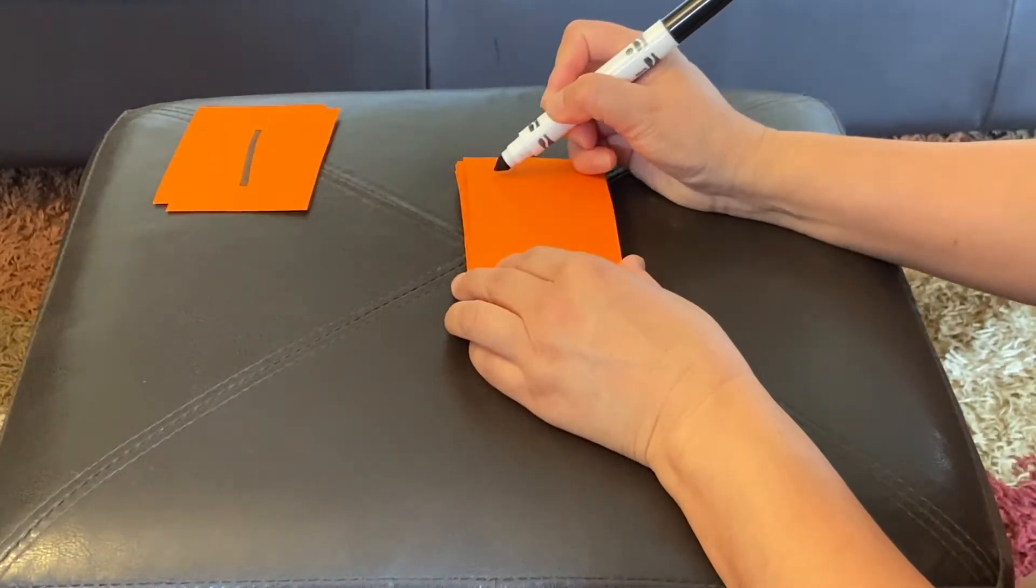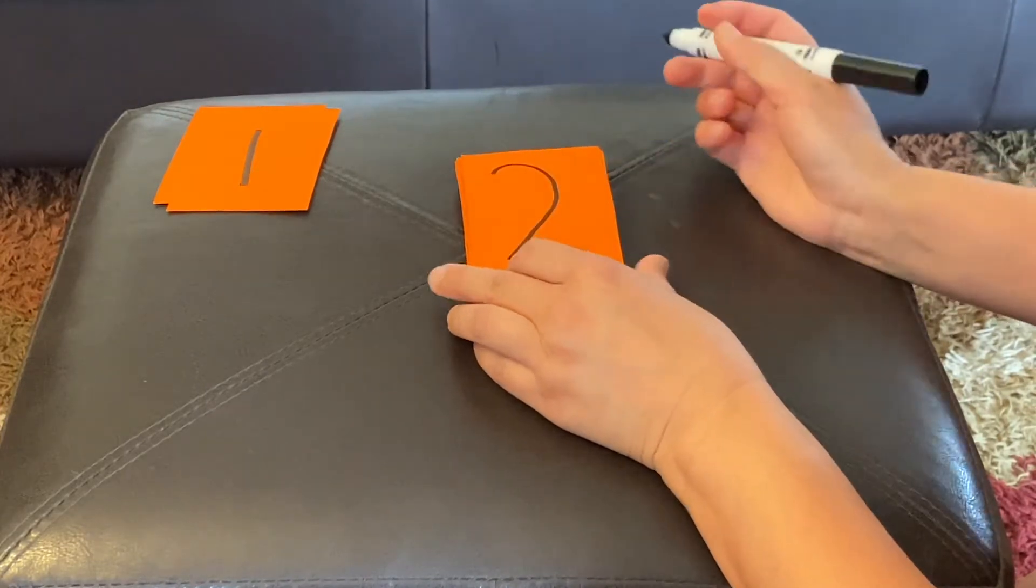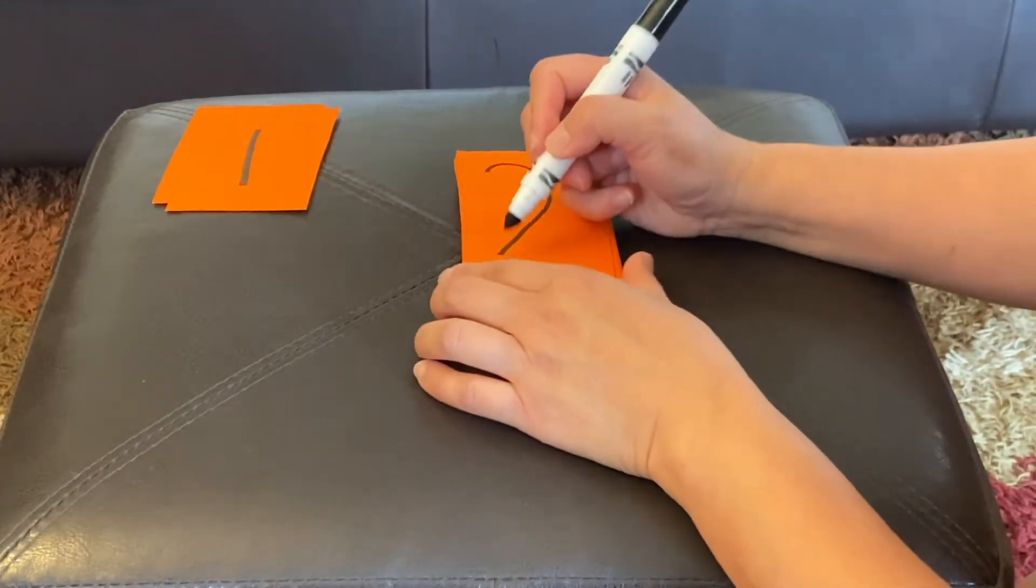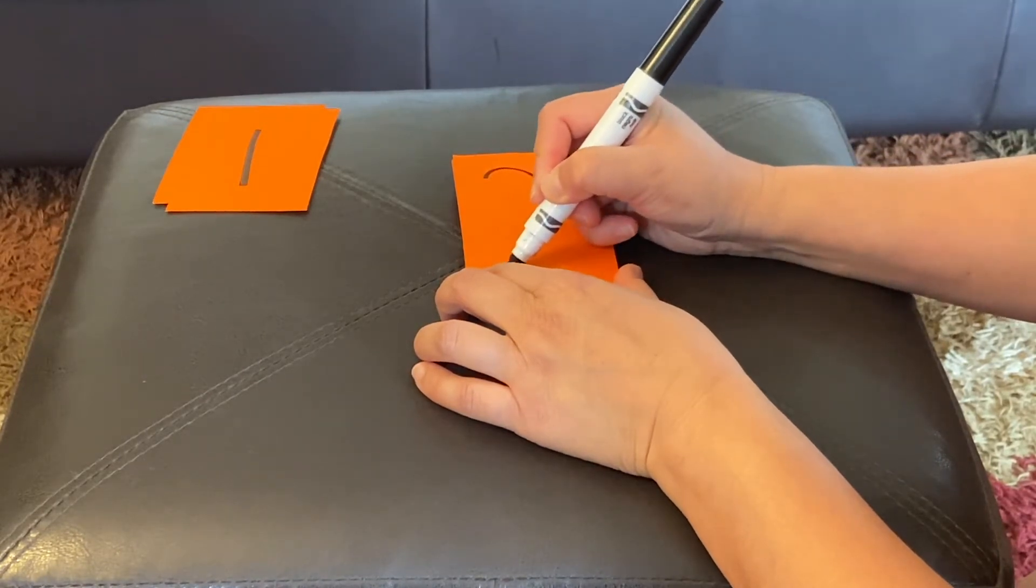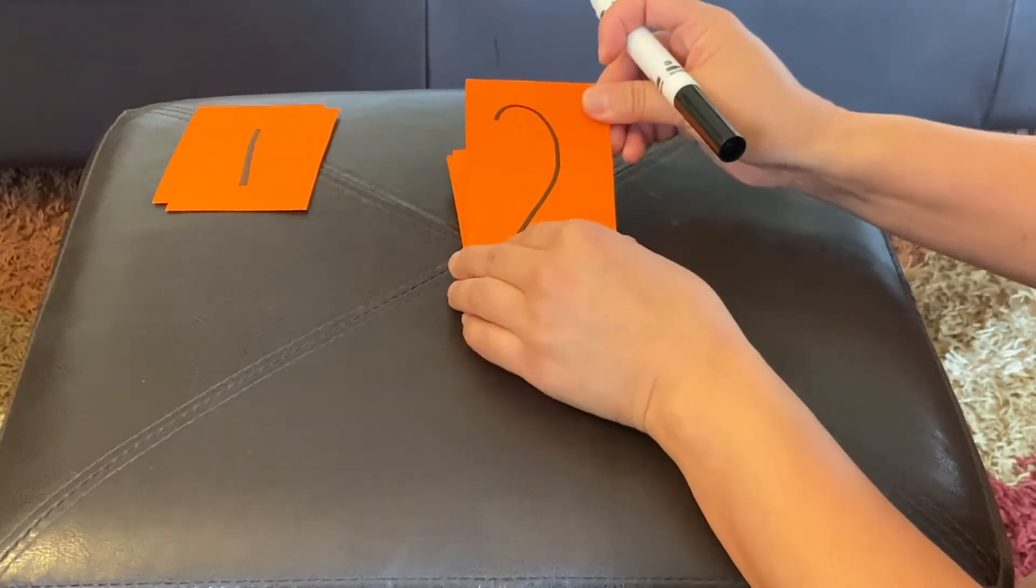And then two. It's kind of like half of a heart. So, a curve, and then a slide down, and then walk it out. There's your two.